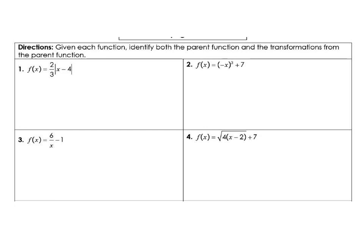So for this first part, your parent function would be your absolute value of x, and your transformations – we do need to list those out. You have a vertical compression, and we know that because of the value on the outside. So a vertical compression by two-thirds, and then we also have a translate right 4.